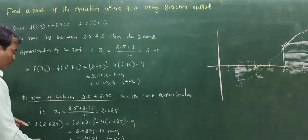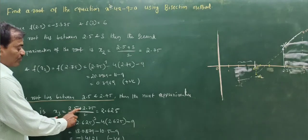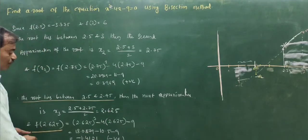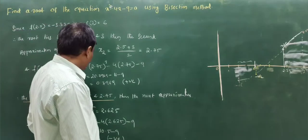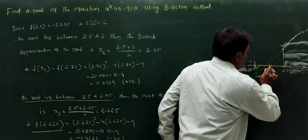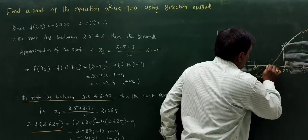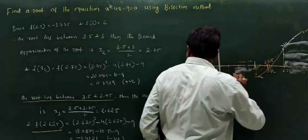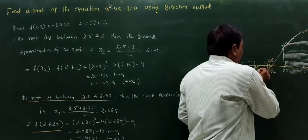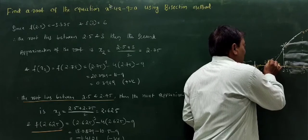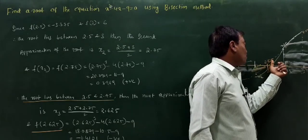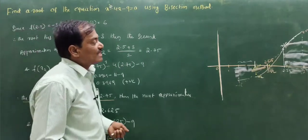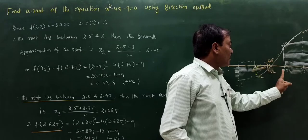The third approximation: x3 = (2.5 + 2.75) / 2 = 2.625. The function value at this point is negative. So the root does not lie between 2.5 and 2.625; the root lies between 2.625 and 2.75. The next approximation root lies in the interval [2.625, 2.75].